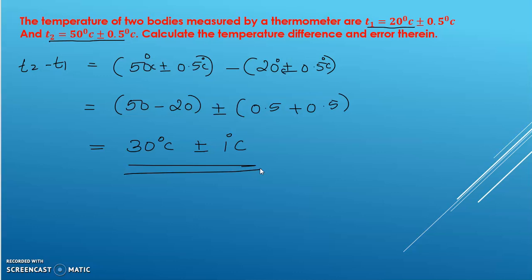The final temperature difference is 30°C. With an error of 1°C, the result can range from 29°C to 31°C. This is a simple example of a subtraction operation — when you add or subtract quantities, the absolute errors always add. That is the equation-wise explanation.